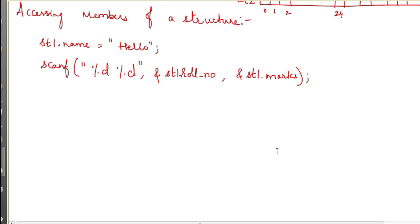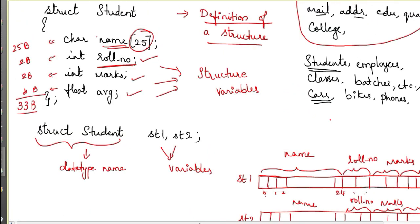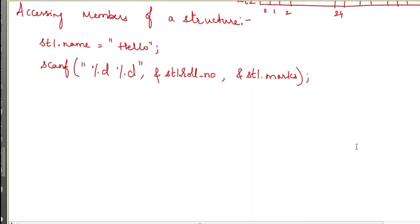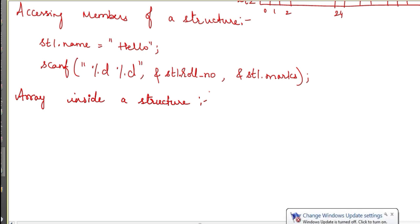A structure can also contain arrays as members. For example, if marks is an array of 5 subjects instead of a single integer, we declare it as int marks[5] inside the structure. The character array name[25] is also present, but we treat it as a single string rather than accessing individual characters. If you have an array inside a structure, you access elements using variable name dot array name with the subscript.